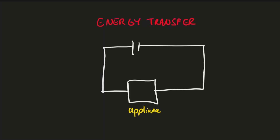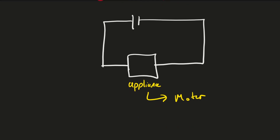We've already seen energy transfers and now we can look specifically at energy transfers in the context of electricity. Whenever you plug in an appliance at home or run out of batteries, you're always trying to bring about an energy transfer — converting electrical energy to a more useful type. For example, if your appliance is a motor, you're creating an energy transfer from electrical energy to kinetic energy.